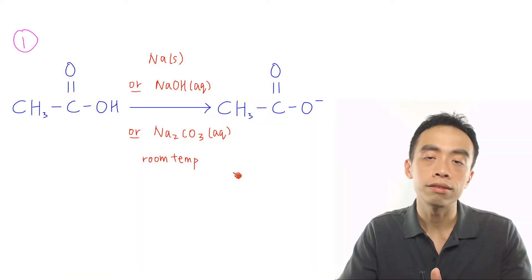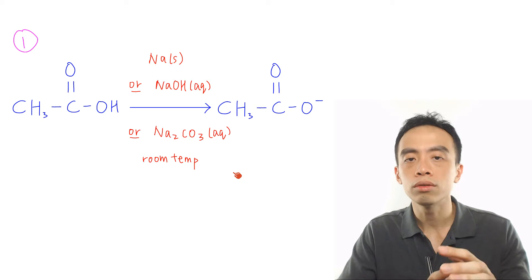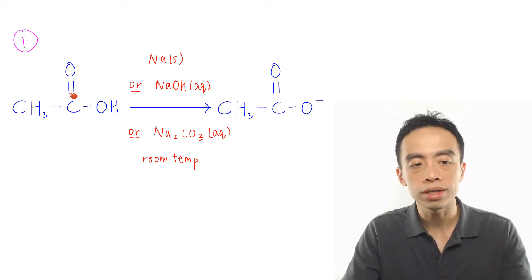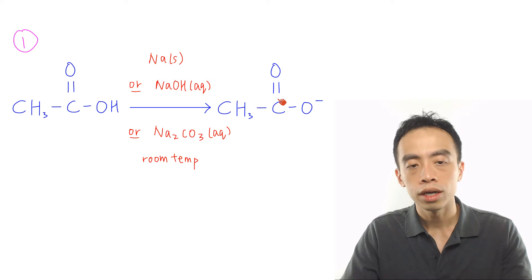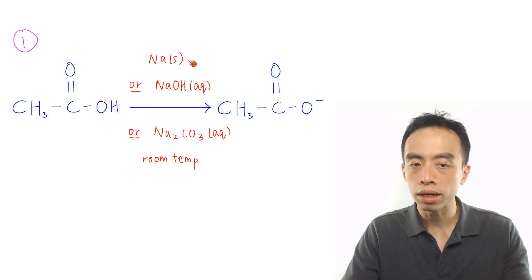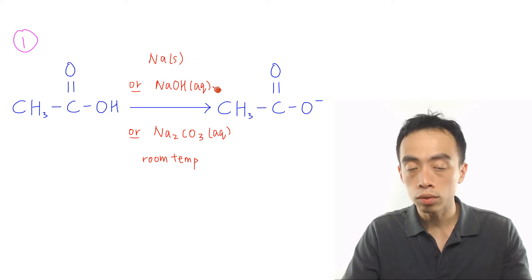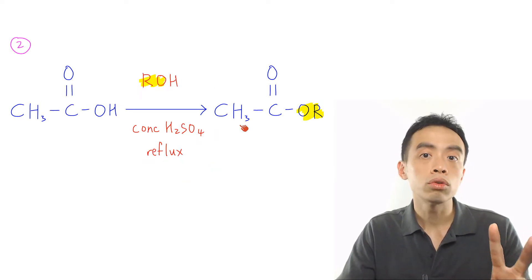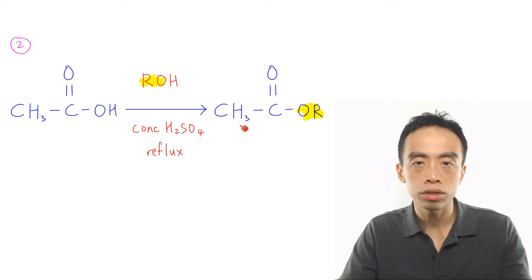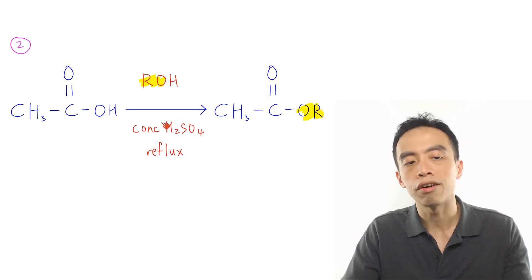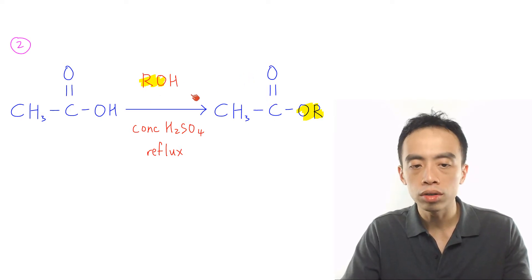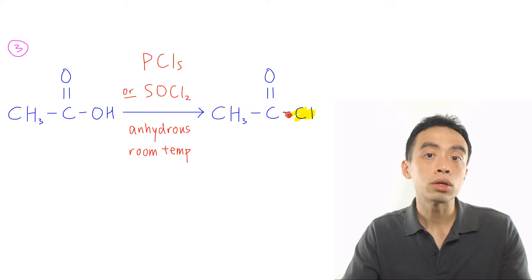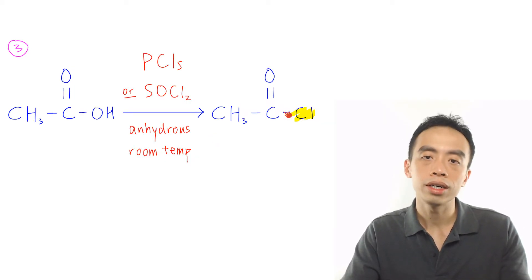Now let's talk about the reactions of acid first. The first masnone reaction will be the neutralization of carboxylic acid to form our carboxylate. This is done using either sodium metal, sodium hydroxide aqueous, or sodium carbonate aqueous at room temperature. The second masnone reaction of carboxylic acid would be the esterification or condensation reaction of my acid to form esters. This is done using alcohol in concentrated H2SO4 catalyst reflux.